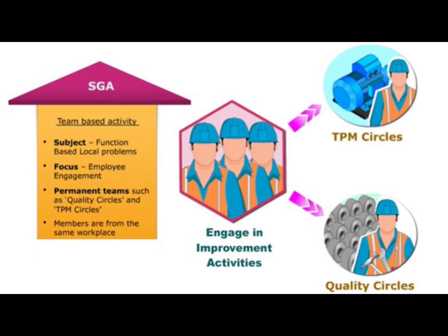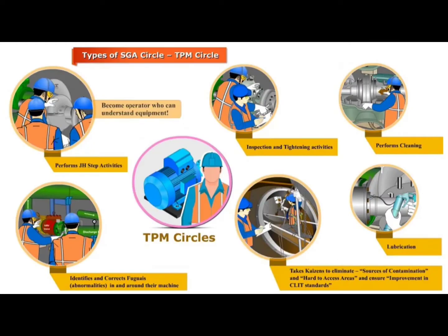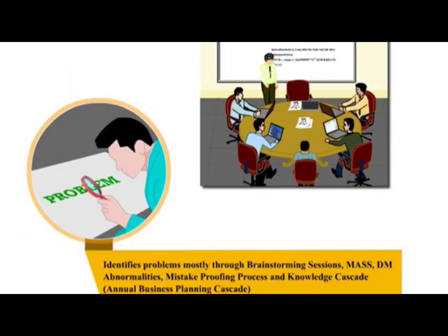There are two categories of SGA circles in most companies, namely TPM circles and quality circles. Each TPM circle consists of a small group of frontline employees who continually work to control and improve the quality of their work, products and services.